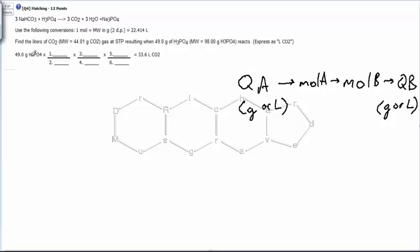With this one we're starting out with a number of grams of H3PO4, which means we're at grams of A, and we're looking for liters of CO2, which will be liters of B. So we're going to have to go from grams of A to moles of A to moles of B to liters of B.